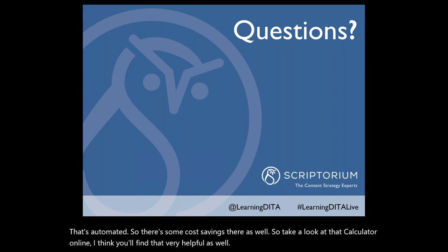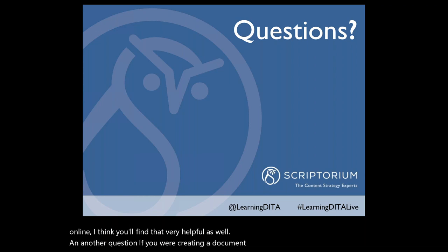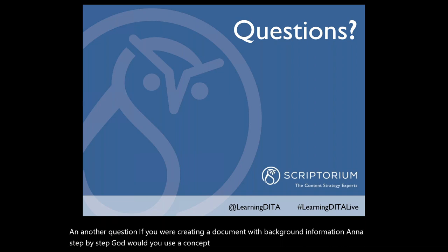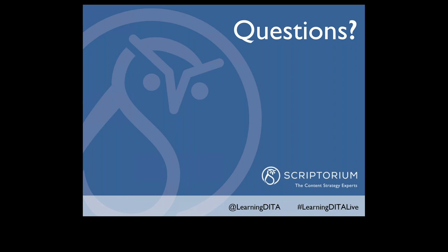Another question: If you were creating a document with background information and a step-by-step guide, would you use a concept or a task? Simon explains those are two different types of information. All background information would go in concept topics, and all tasks would go in individual task topics. Then in the map, you'd organize the different topics in whatever order is needed for the deliverable that contains both background information and tasks.